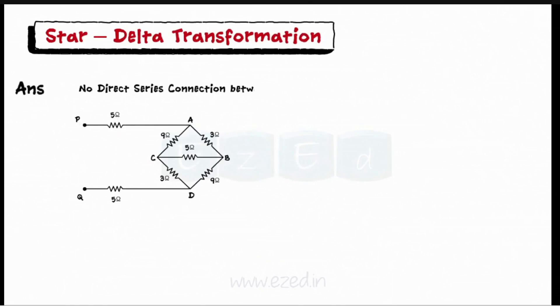As we can see, we don't have any direct series or parallel connections. We need to simplify the network using star-delta transformations.